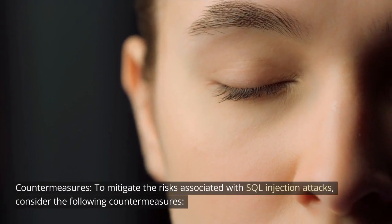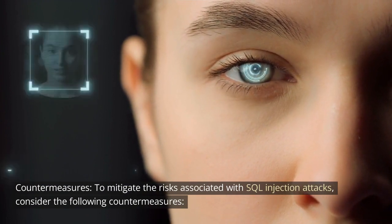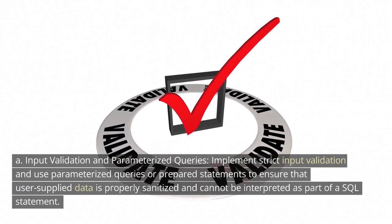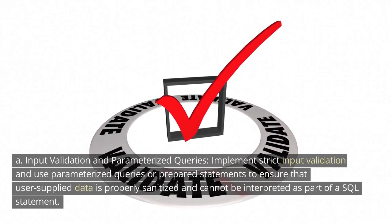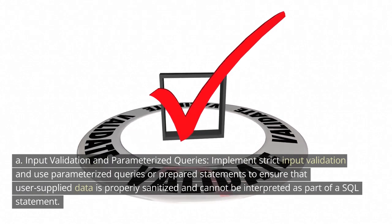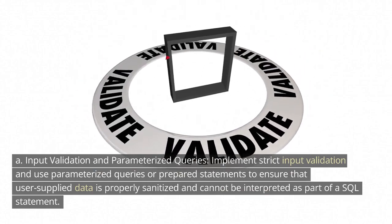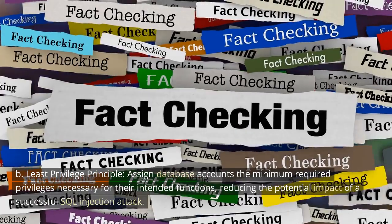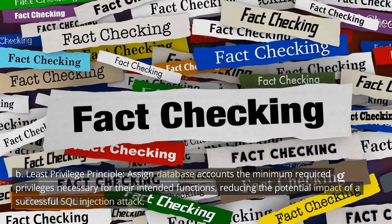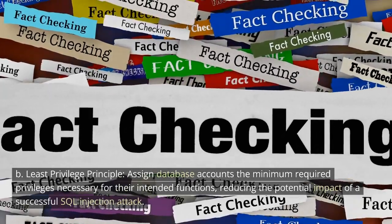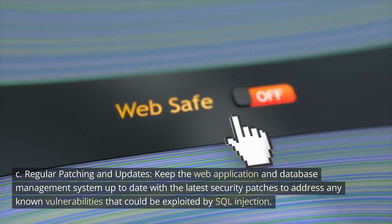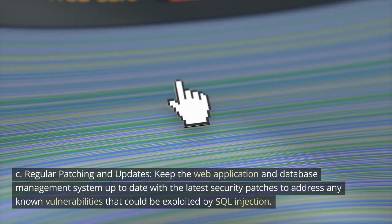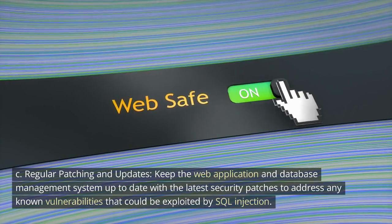To mitigate the risks associated with SQL injection attacks, consider the following countermeasures. Implement strict input validation and use parameterized queries or prepared statements to ensure that user-supplied data is properly sanitized and cannot be interpreted as part of a SQL statement. Assign database accounts the minimum required privileges necessary for their intended functions, reducing the potential impact of a successful SQL injection attack. Keep the web application and database management system up to date with the latest security patches to address any known vulnerabilities.